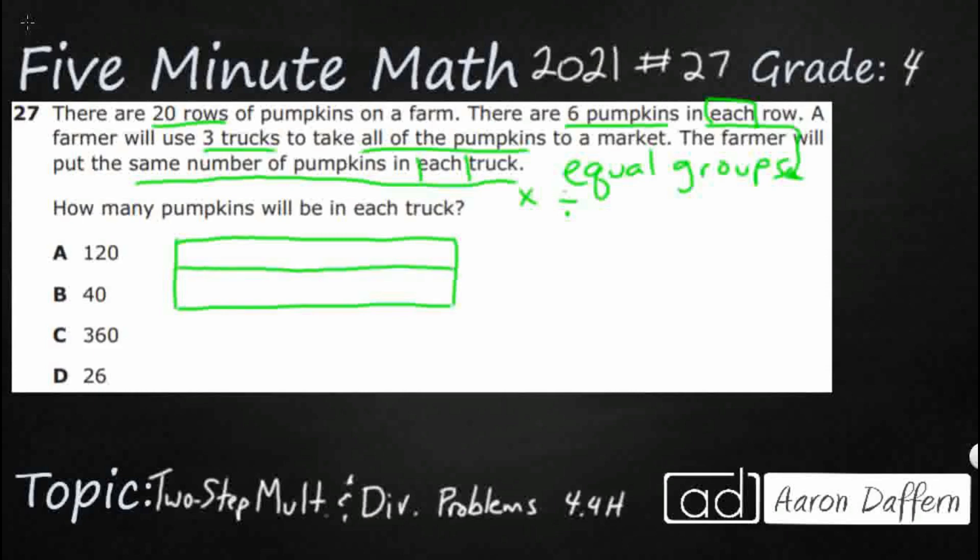First, I need to figure out what's my total number of pumpkins. That is something I don't know. So, total pumpkins, that's my unknown here, but I do know two facts that are going to help me. I've got 20 rows.